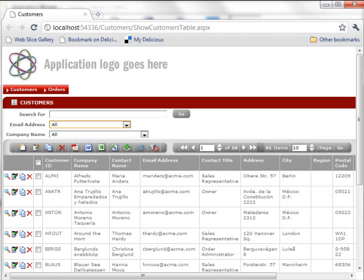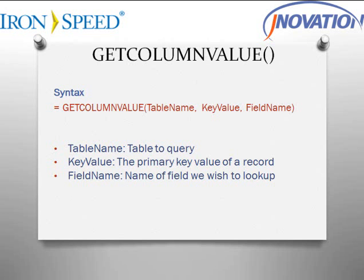Before we begin customizing the application, let's review the Get Column Value formula and its syntax. As we can see, it requires three parameters. TableName is the table that we want to query. KeyValue is the primary key value of a record that we want to look up. And FieldName is the name of a field that we wish to retrieve the data for.